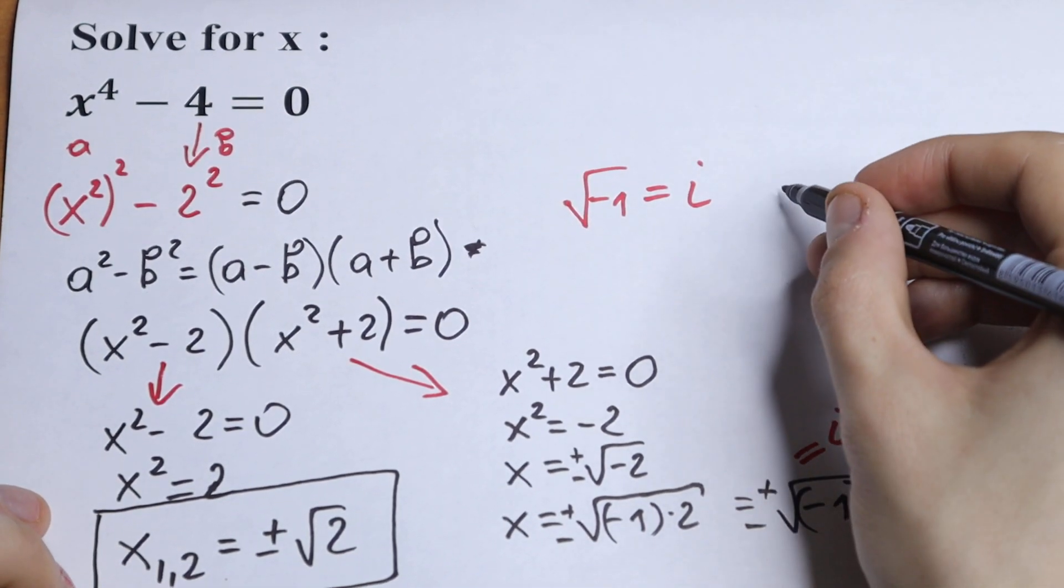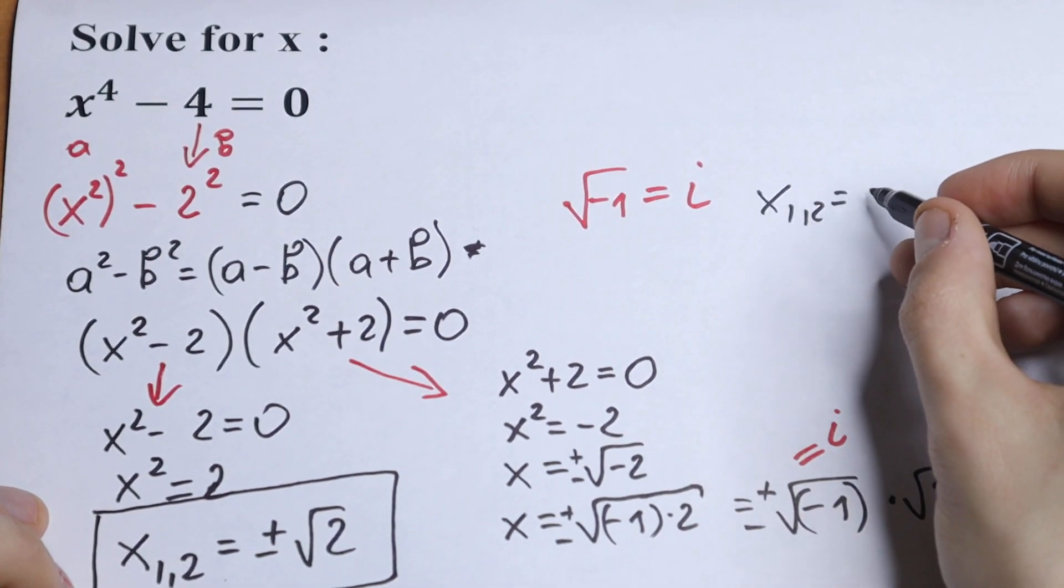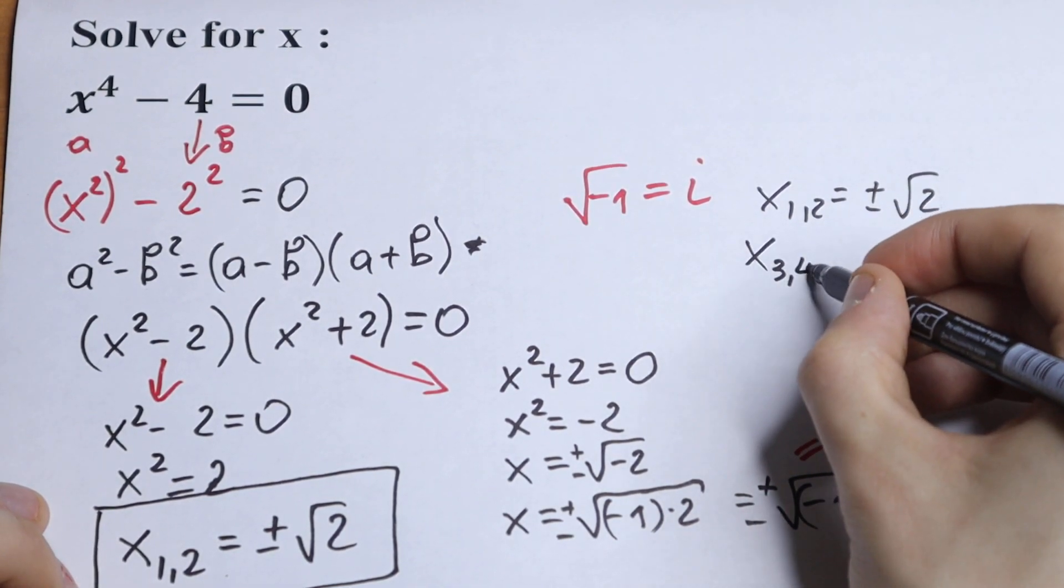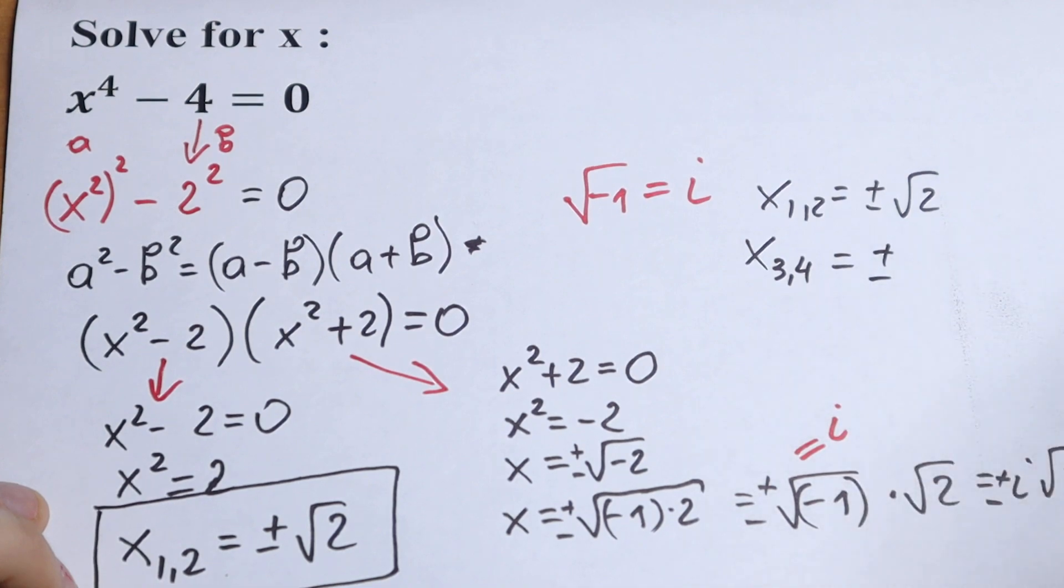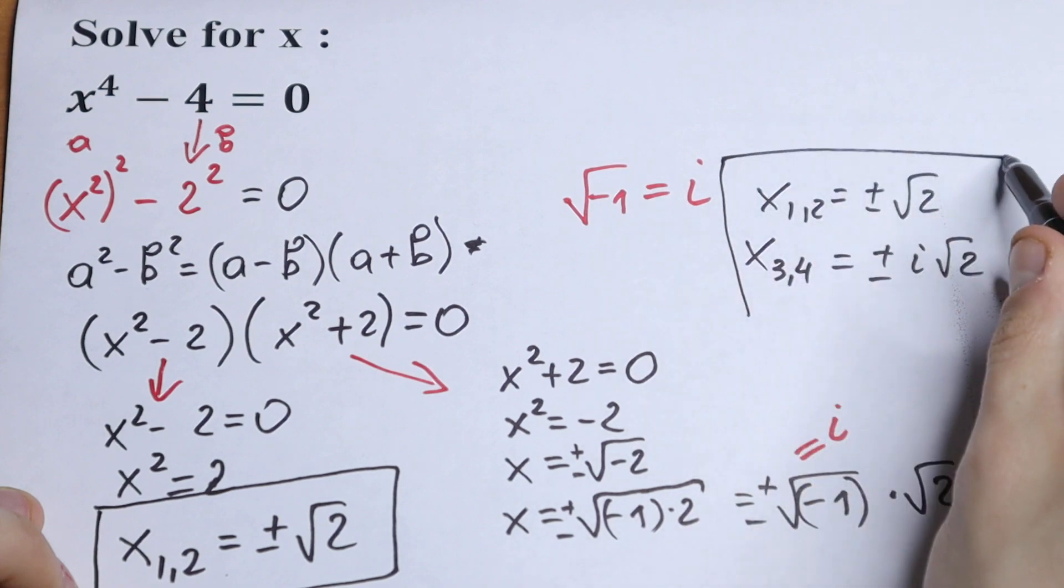I write these in real numbers. x1 and x2 equal to plus minus square root of 2. And our complex roots x3 and x4 equal to plus minus i square root of 2. And this is our 4 roots.